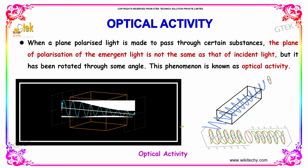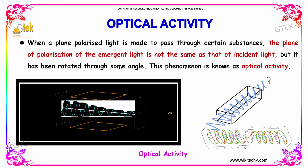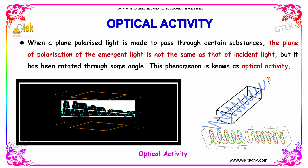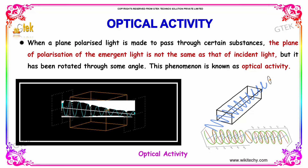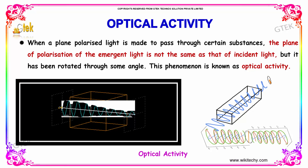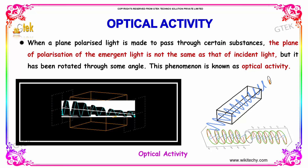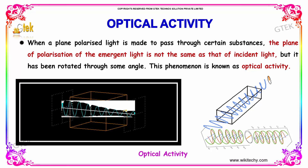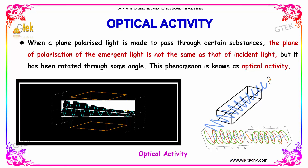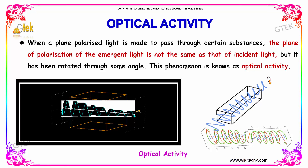Let's move on to optical activity. When a plane polarized light is made to pass through a certain substance, the plane of polarization of the emerging light is not the same as that of the incident light, but it has been rotated through some angle. This phenomenon is considered as optical activity.